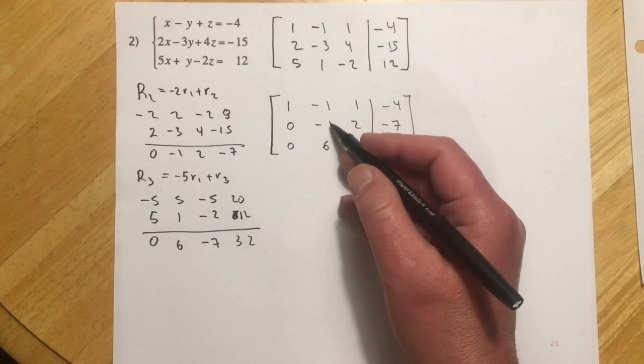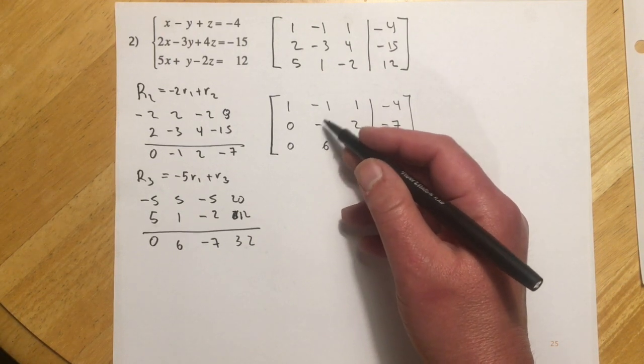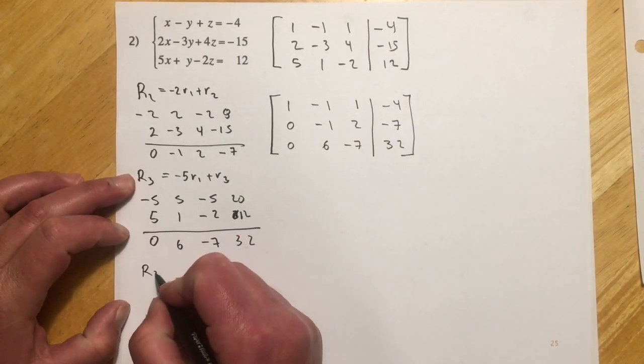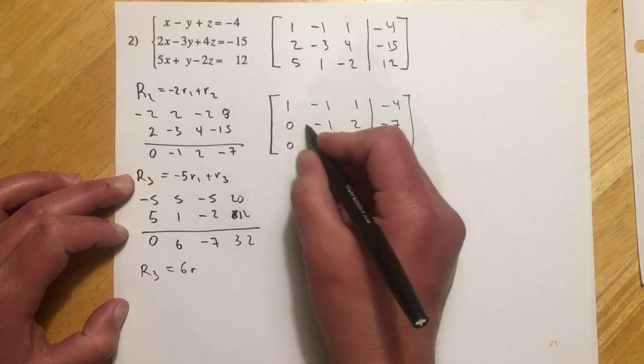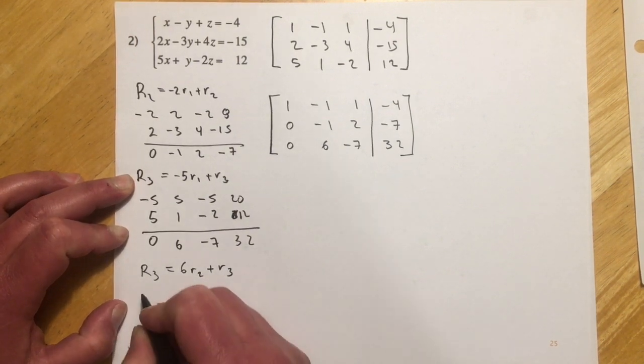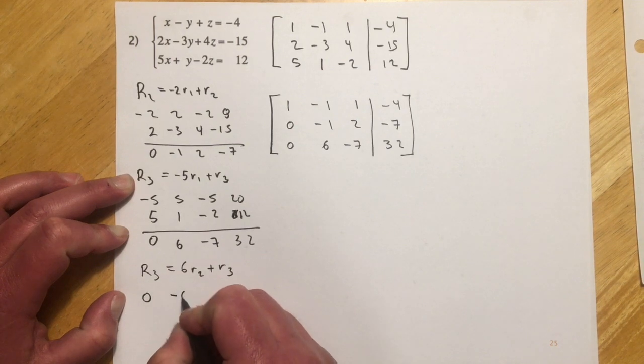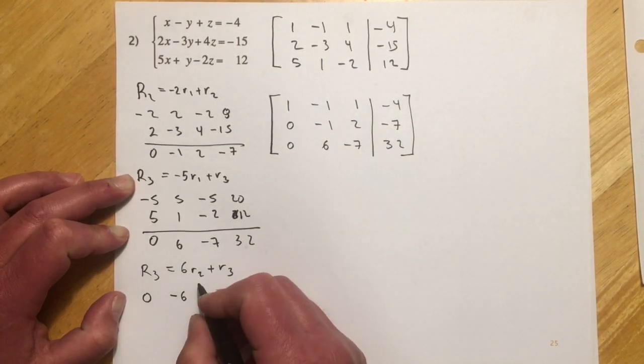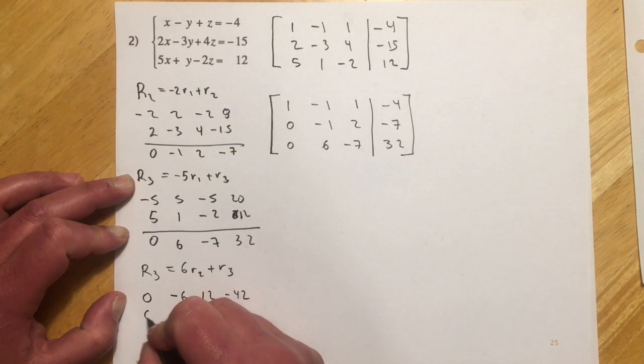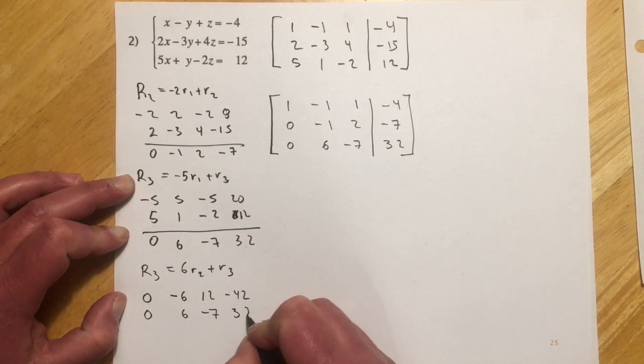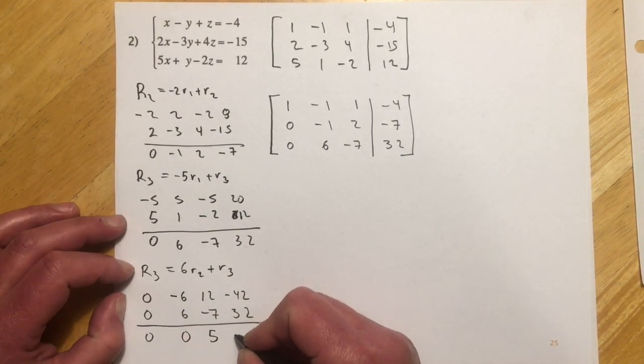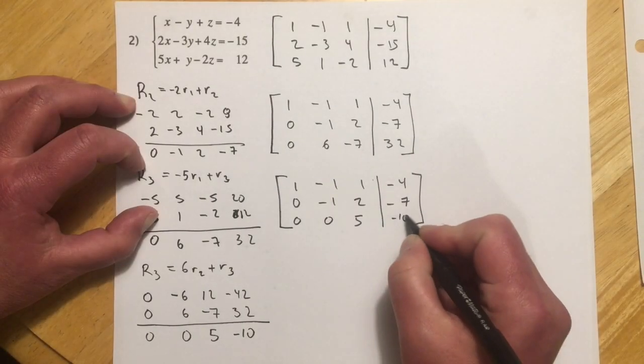And so then the next thing I need is a, I could make this a positive 1. I think I'll do that in a second. I'm going to use this negative 1 right here to knock out that 6. So then my new row 3, I'm going to get from going 6 times existing row 2, negative 6, positive 6. And then add row 3 to that. So that would be 0, negative 6, and then 12, and negative 42. And then I'll add this row to it. So 0, 0, this would be 5, and then this would be negative 10.